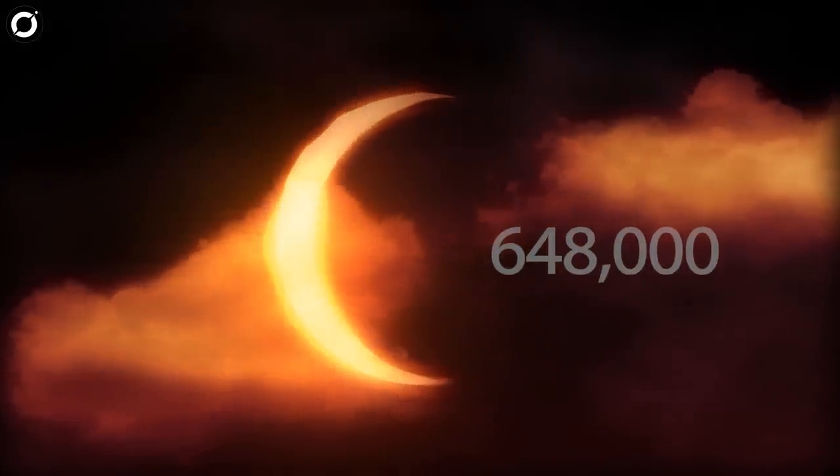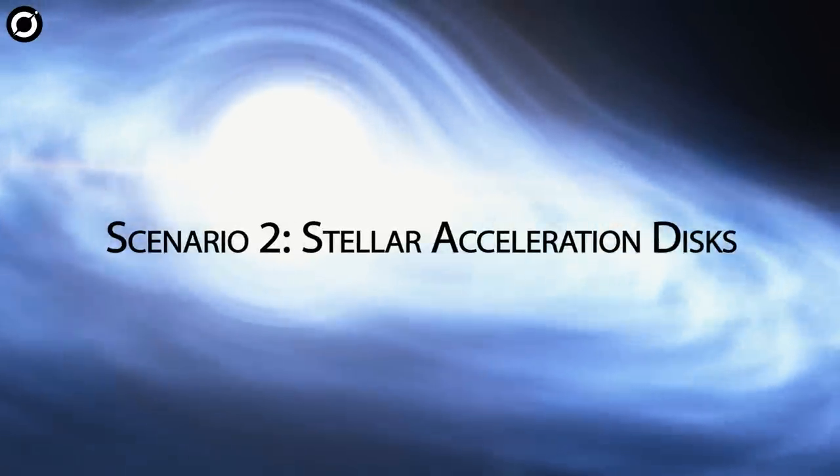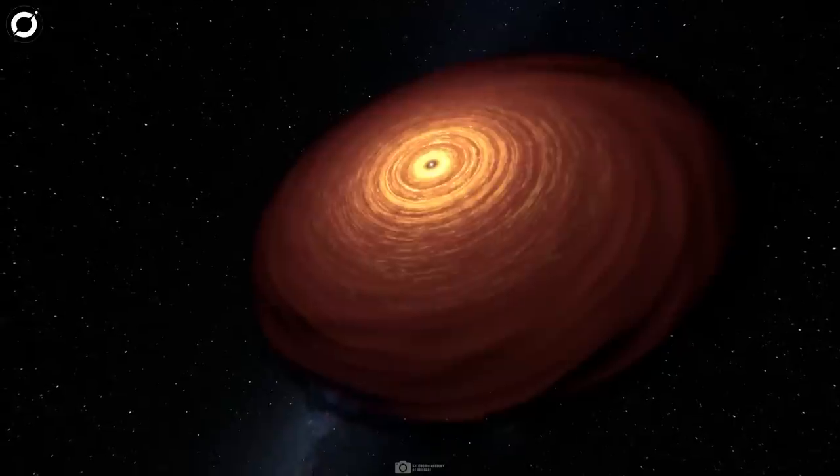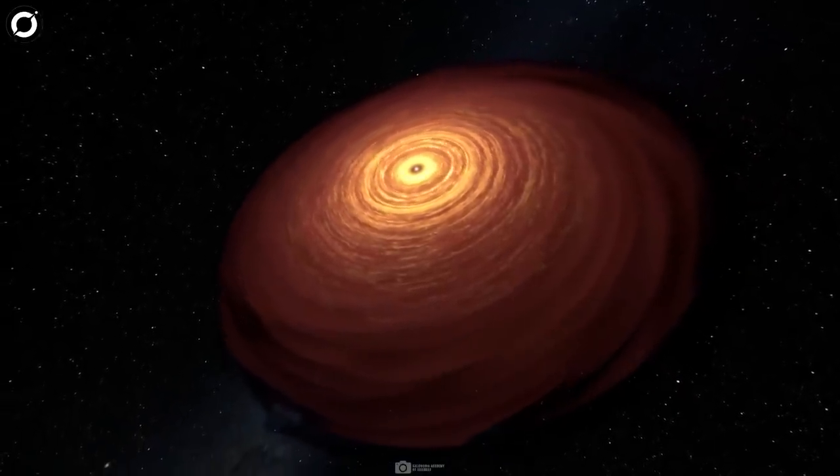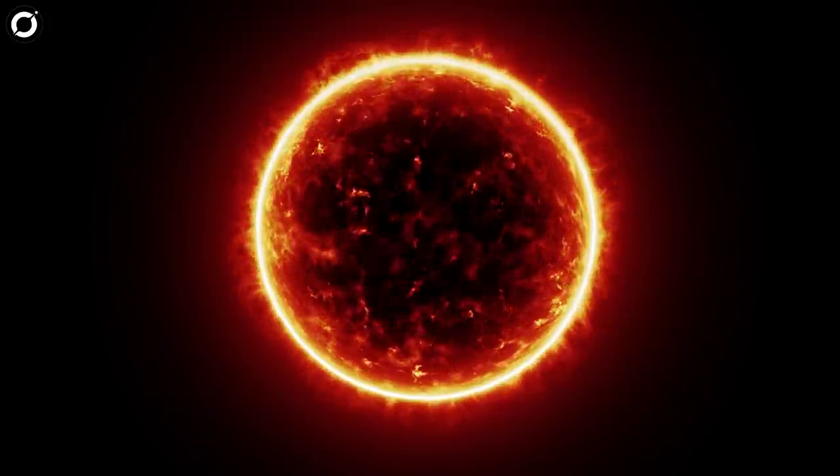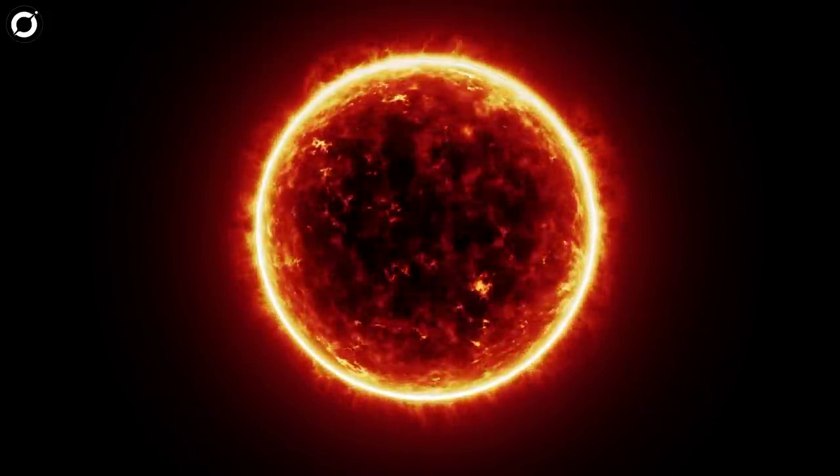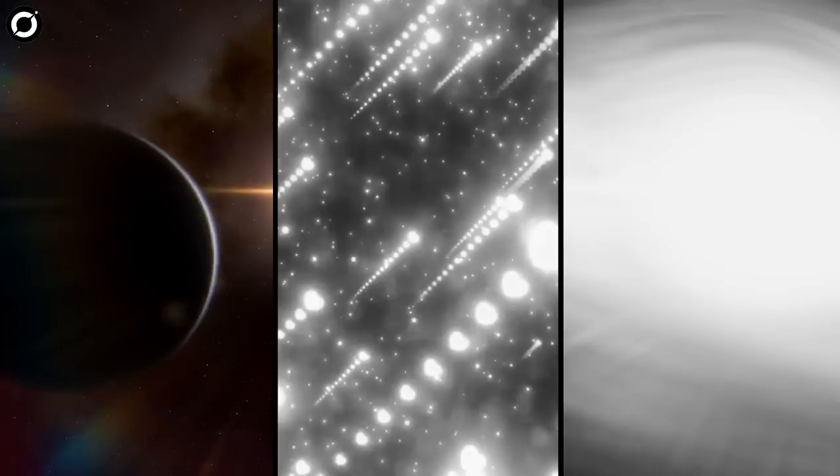Scenario two: stellar accretion discs. Stellar accretion discs are found around newborn stars as planets start to form around them. This star, however, is thought to be too old for any remnants of a stellar accretion disc to still be orbiting. So not a planet, not comets, and not an accretion disc.